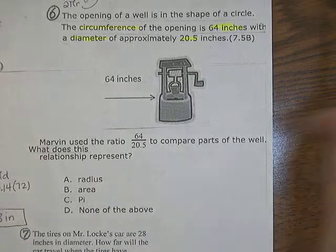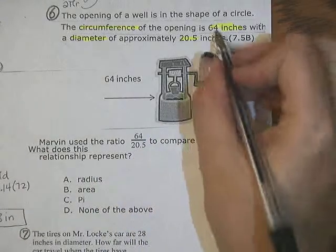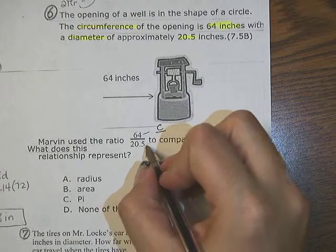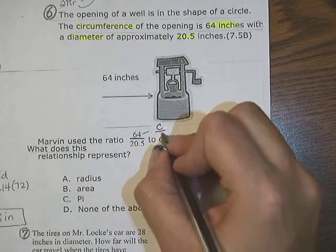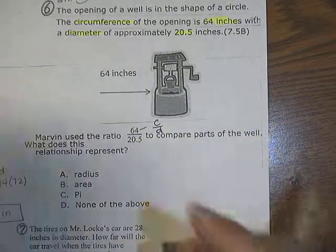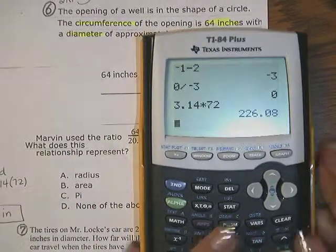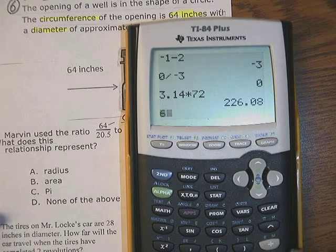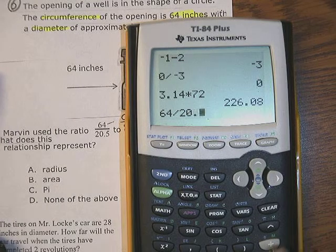Well, let's see. 64 was told to be my circumference, so that's the circumference. And then 20.5 is my diameter. Now let's see what happens if I put this ratio in a calculator and divide it. 64 divided by 20.5.